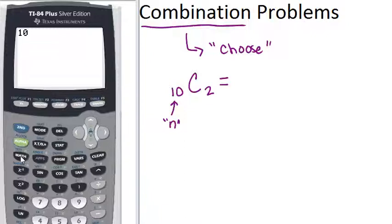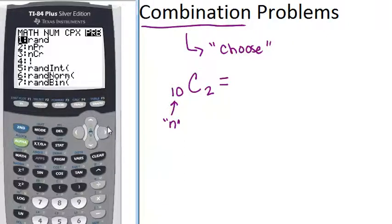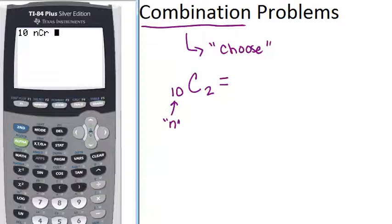Then you push the math button and scroll over until you see PRB, which stands for probability. Then scroll down until you see NCR, or you could push the number 3 and push that. So NCR stands for combinations.